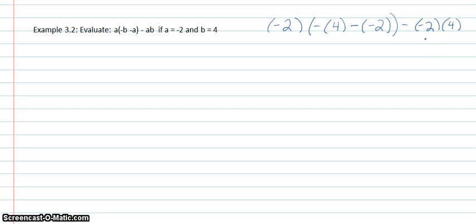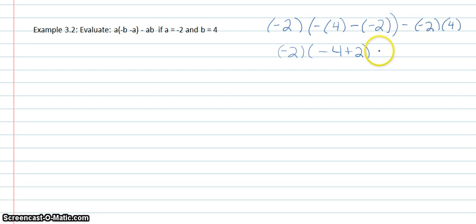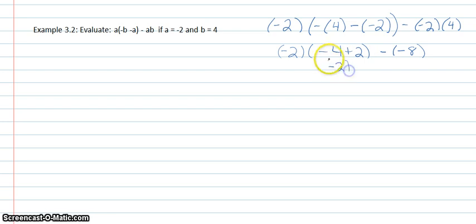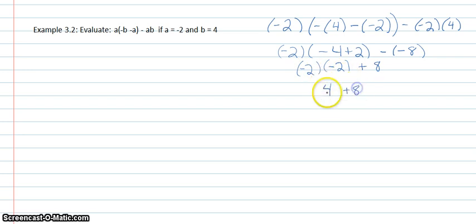Again, we just use the order of operations. So I'll have negative 4 plus 2. And then I can go ahead and multiply these together — negative 2 times 4 is negative 8. Then simplify inside the parentheses: negative 4 plus 2 is negative 2. Still being multiplied by the negative 2 that was already there. And then 2 negatives will make a positive, so plus 8.